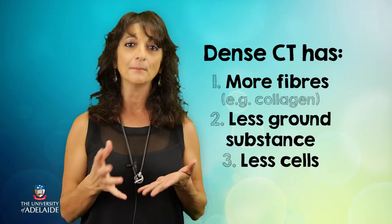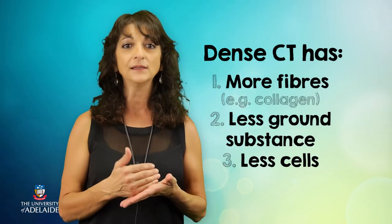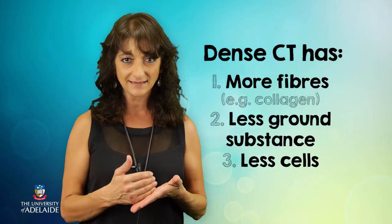Do you remember where we found dense connective tissue when we took the tour of the mouth? That's right, our gums — they are a visible example of this hard and resilient tissue that can withstand resistance. Dense connective tissue differs from loose connective tissue in that its extracellular matrix is made up mainly of fibres with very little viscous ground substance.